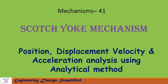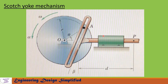I will derive equations for a point on the slider of a Scotch yoke mechanism. In the picture shown is a variation of the Scotch yoke mechanism. The crank length is r, the distance between the center point of the slot to point P is d, the angular angle of inclination of the slot is beta with respect to vertical, and the crank has angular velocity omega and angular acceleration alpha.